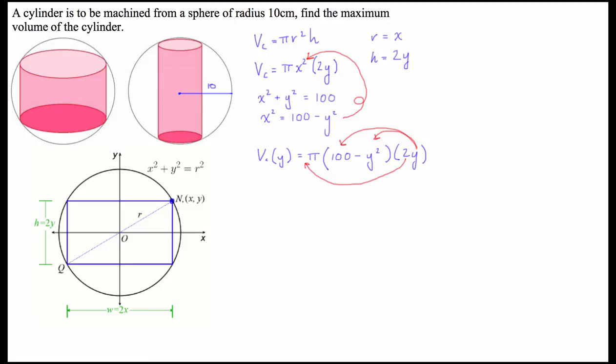Now, the reason I'm going to do that will appear obvious in a second. So, once we've done that, we end up with the function 2pi bracket 100y minus y cubed.